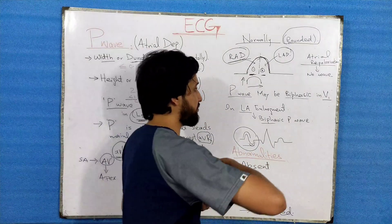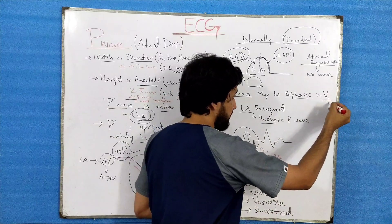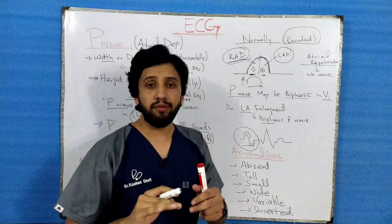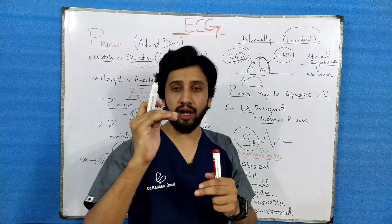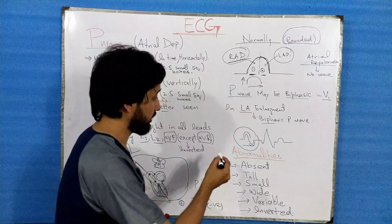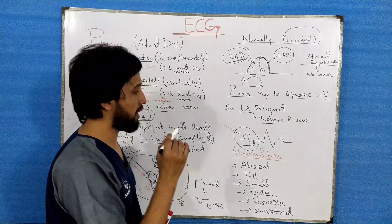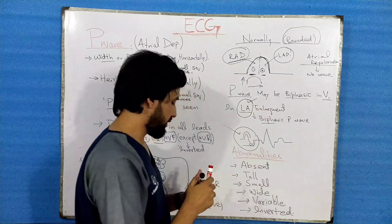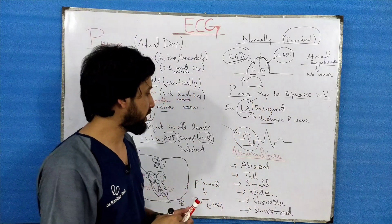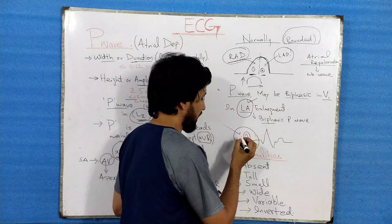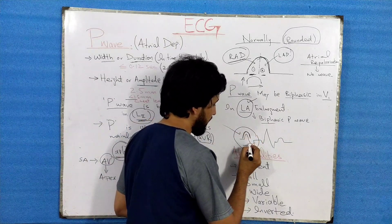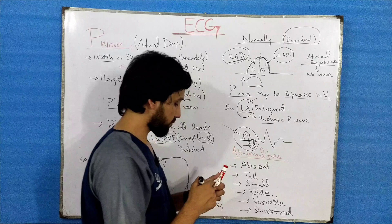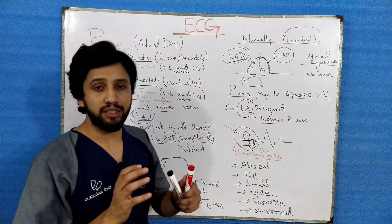Another important point is the biphasic P wave. In V1, the P wave can be biphasic, meaning it is halfway above the isoelectric line and halfway below the isoelectric line. This pattern is usually seen in left atrial enlargement — when there is hypertrophy of the left atrium, you can see this biphasic P wave pattern with a positive component and a negative component. Do not confuse the negative component with the Q wave.